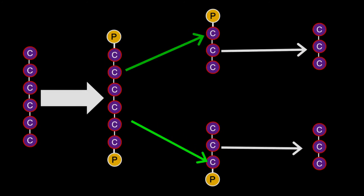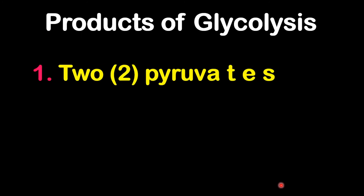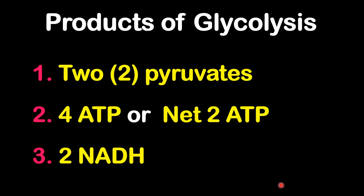An overall look at the entire reaction: glucose first converts into fructose-1,6-bisphosphate, then into two three-carbon molecules with phosphate attached to the ends. The glyceraldehyde-3-phosphate molecules then turn into pyruvate. That's the overall reaction for glycolysis. The products are two pyruvate molecules and four ATP total — but a net of only two ATP, because the process requires two ATP to start.